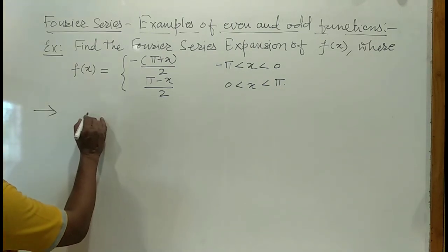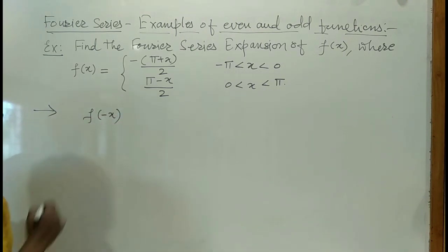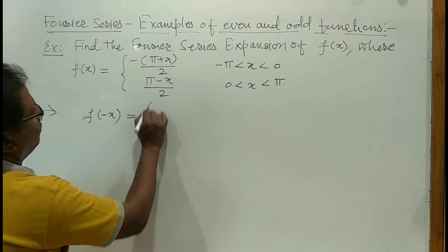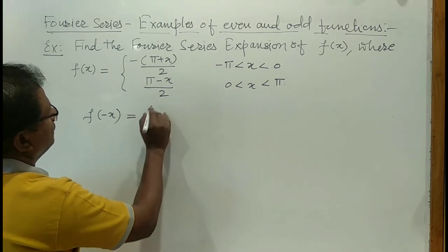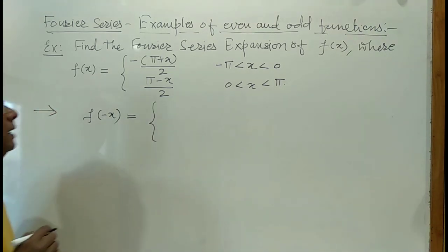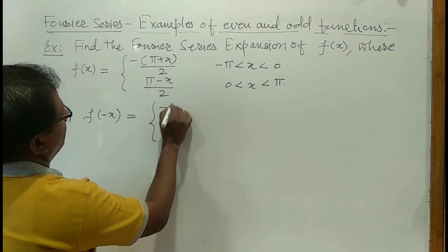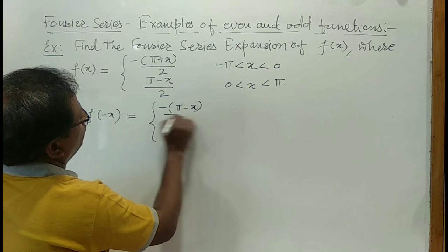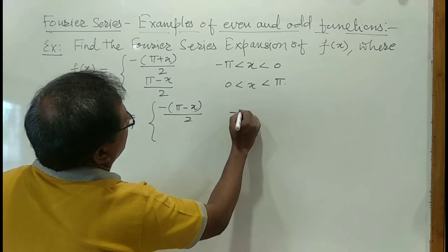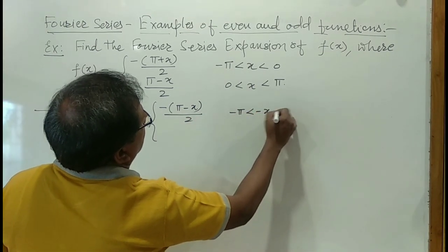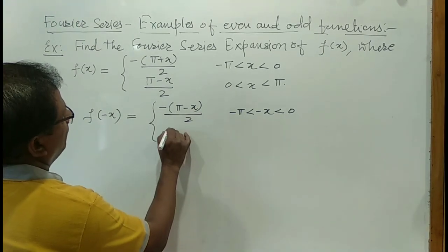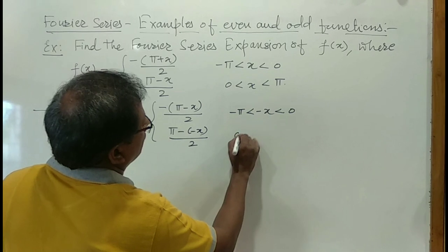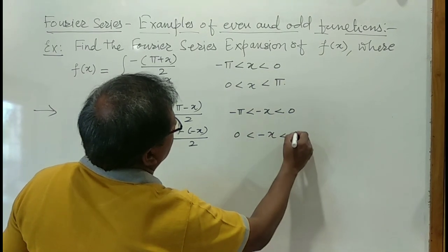To check even or odd, we will find f(minus x). So f(minus x) equals — in the definition of f(x) we replace x by minus x wherever it appears. It becomes: minus pi minus x over 2 for minus pi less than minus x less than 0, and pi minus minus x over 2 for 0 less than minus x less than pi.